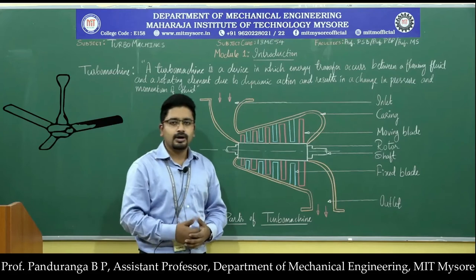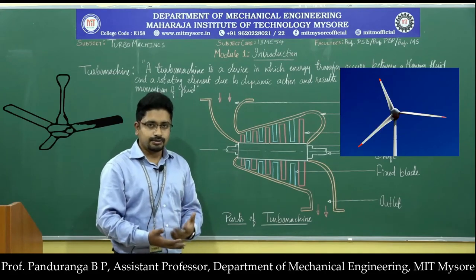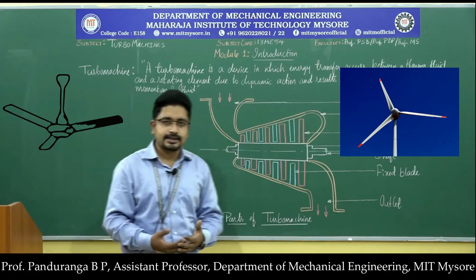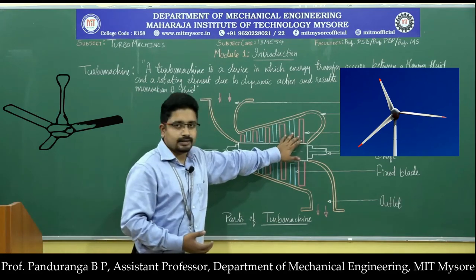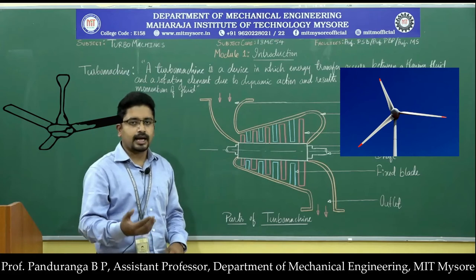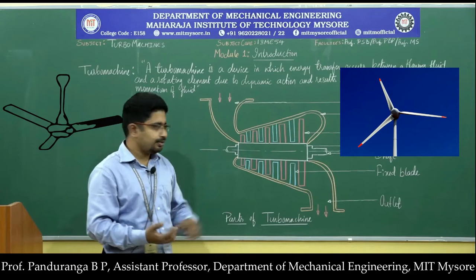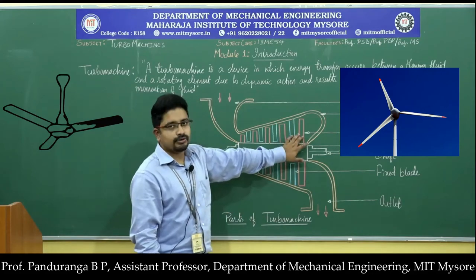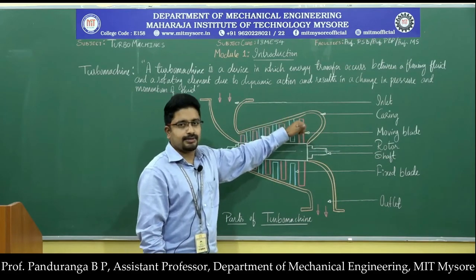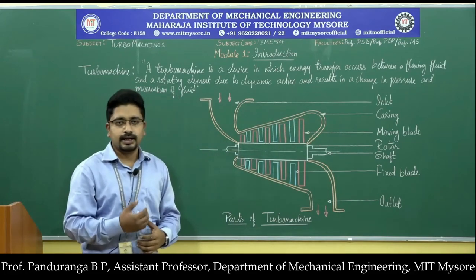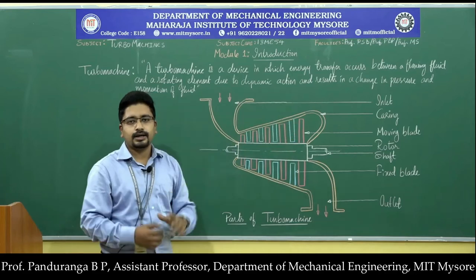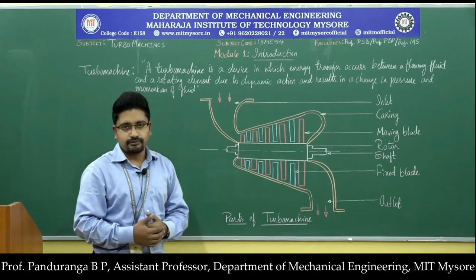A good example is the ceiling fan or the windmill — both are turbo machines. Both do not have a casing and fixed blades, but they have a rotating blade, a rotor or hub, and a shaft. The windmill is a power producing turbo machine and the fan is a power absorbing turbo machine, but both have the shaft, rotor, and moving blade. Where casing and stationary blades are present, their main purpose is to guide the fluid flowing through the turbo machine in a particular direction, depending on whether it's a radial or axial flow turbo machine.